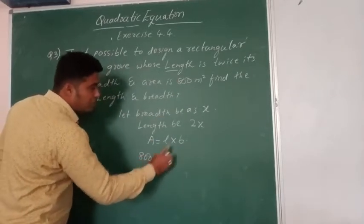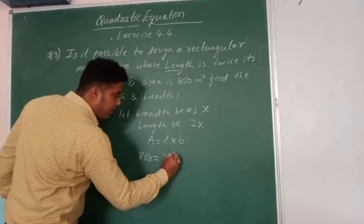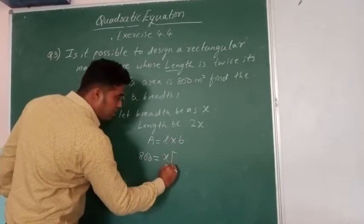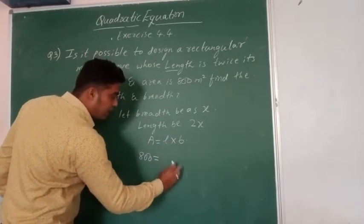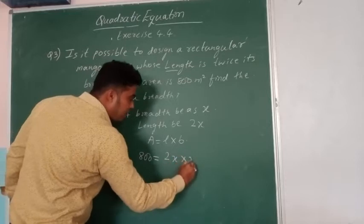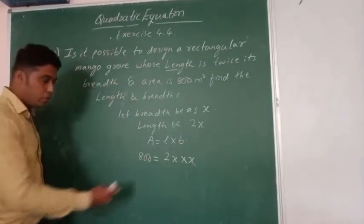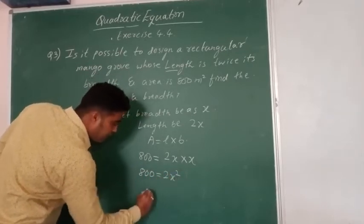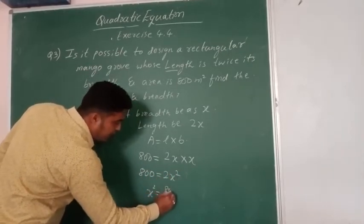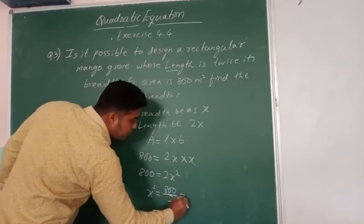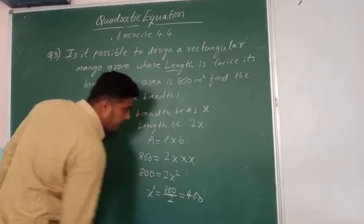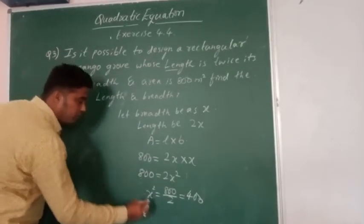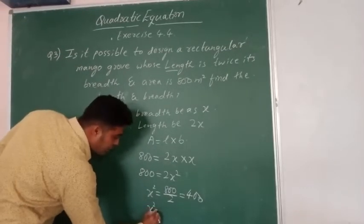800 which is equal to length times breadth. So what it becomes? It becomes 800 is equal to 2X square. This becomes X square is equal to 800 by 2 which is nothing but 400. So we see X square is equal to 400.